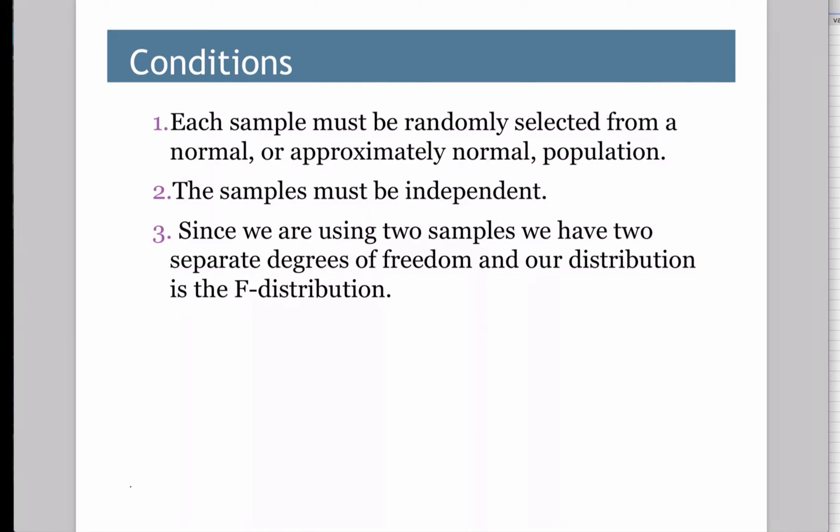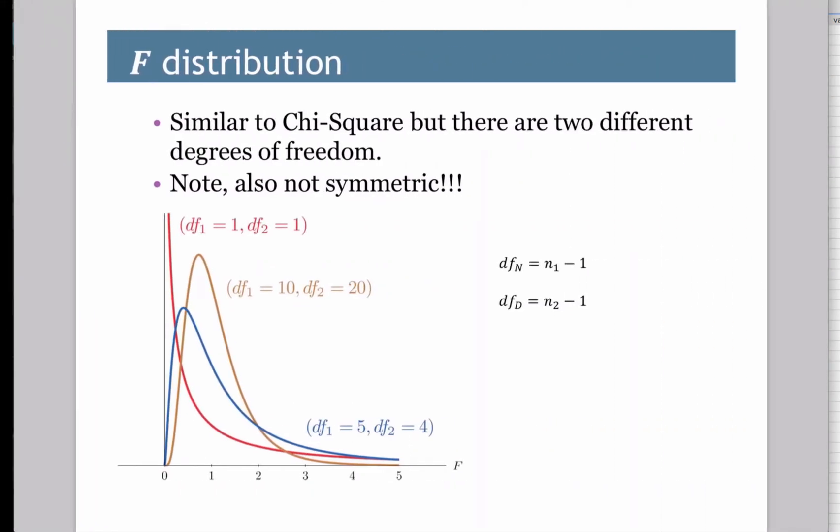Now, because we have two samples, we got two different groups of data, so we need a new distribution because we have now two different degrees of freedom. So a new distribution for us is going to be the F distribution. The F distribution looks very similar to chi-squared, but we have two separate degrees of freedom. Degrees of freedom for sub n and sub d. I'll explain the n and d in a little bit, but they're just n1 minus 1, n2 minus 1 for the two samples. Again, F distribution like chi-squared, it's always skew right, and it is not symmetric.